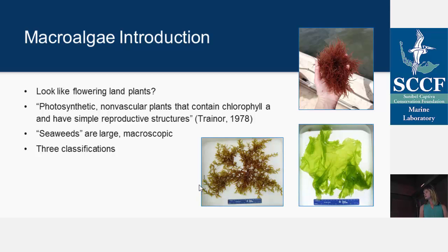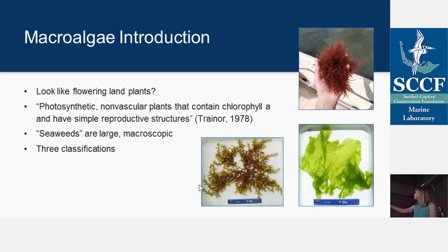They're generally divided up into three broad classifications based on their pigmentation: red algae, green algae, and brown. Up there we have a picture of red algae — Gracilaria. We have the very bright, toxic-looking Ulva lactuca green algae, and some Sargassum as an example of brown.